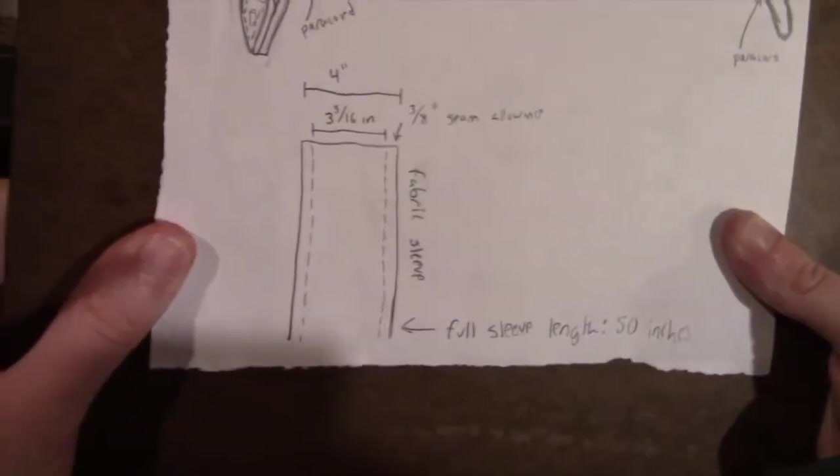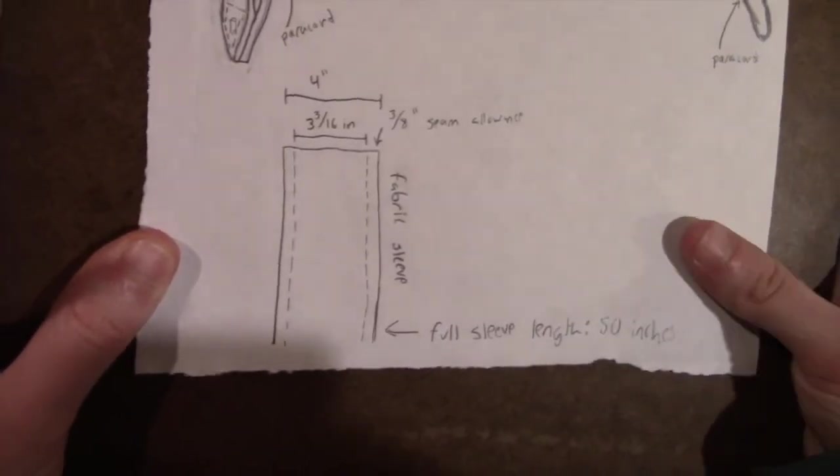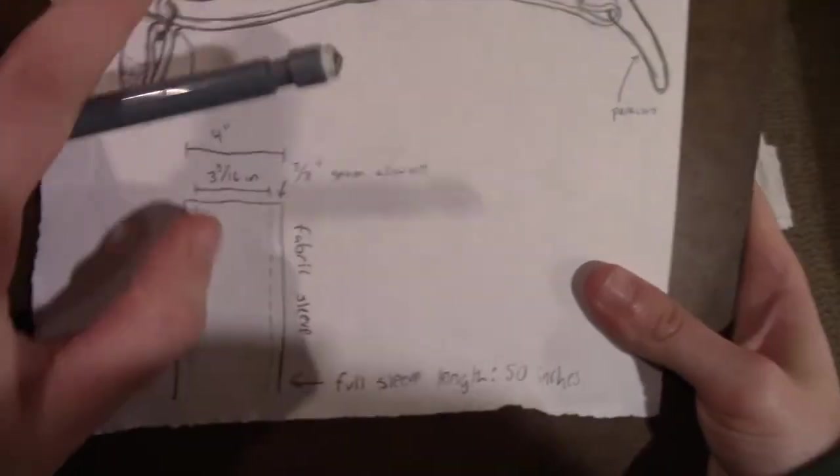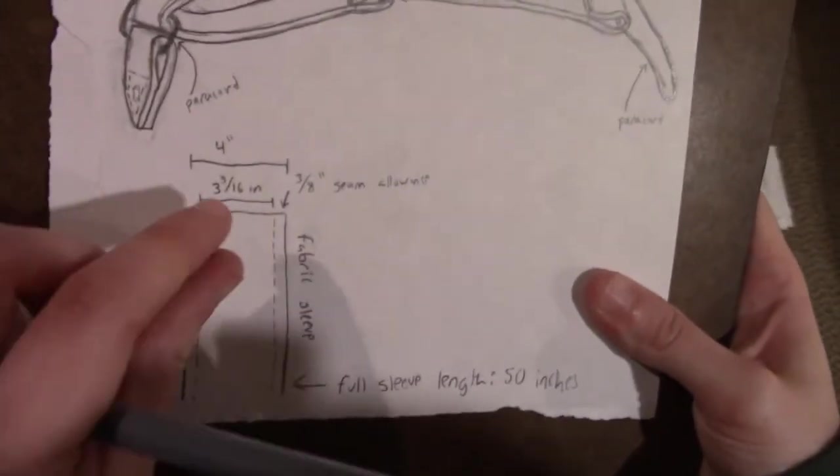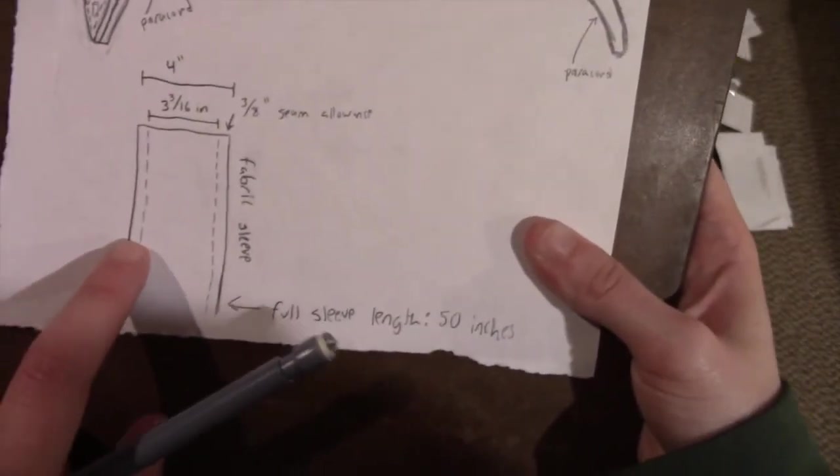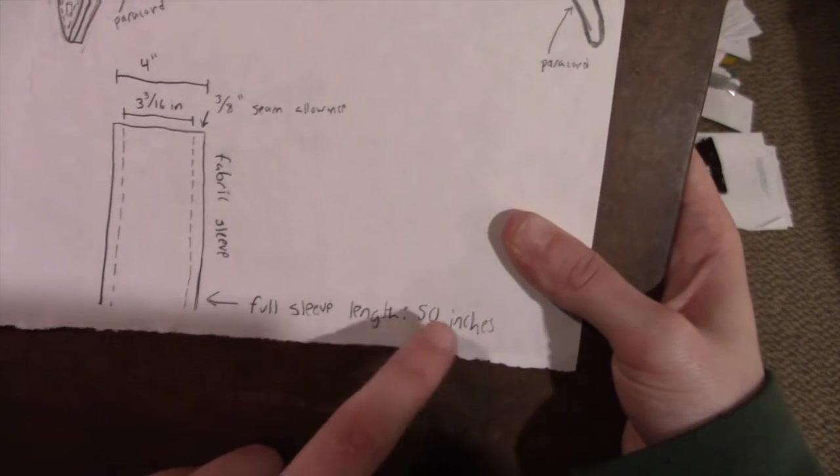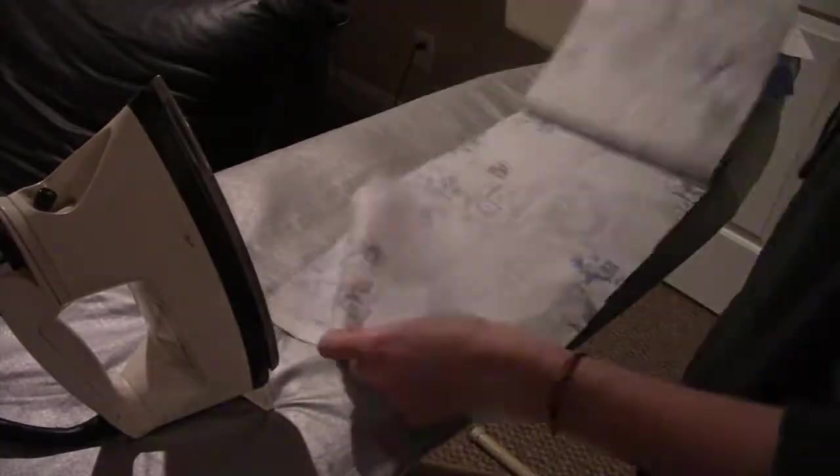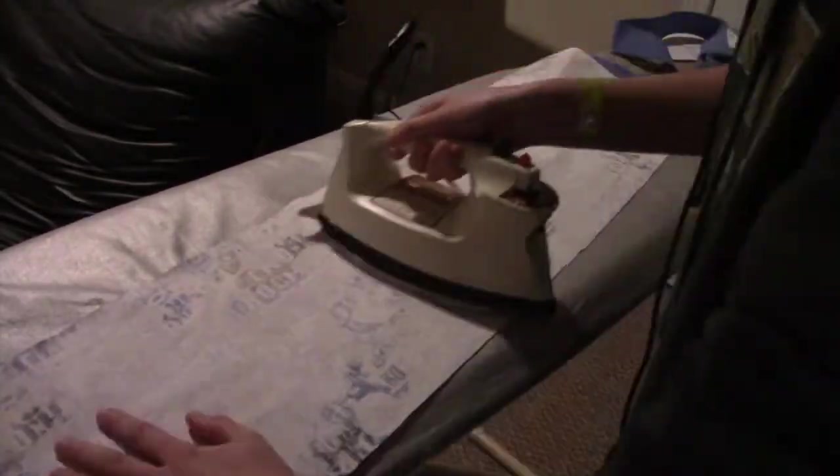Then down here is the fabric. It's about 4 inches wide. The part that's actually the sleeve part is 3 3/16ths of an inch. This itself is only an inch and a half wide but there's a little bit extra for the height of it. And then I have about 3/8ths of an inch of seam allowance. And then the full sleeve length will be 50 inches since it's a little bit longer than my fabric. I'm going to have to attach two of these together. So now I'm going to go ahead and iron my fabric just to make sure it's nice and flat before I start.